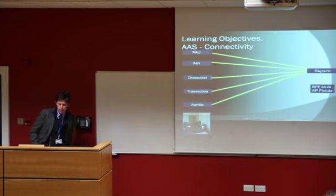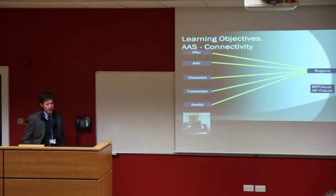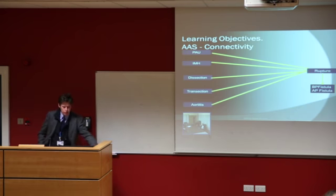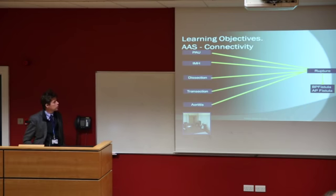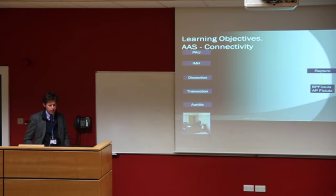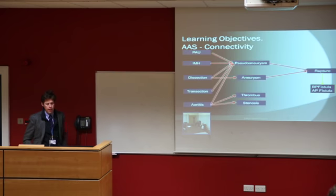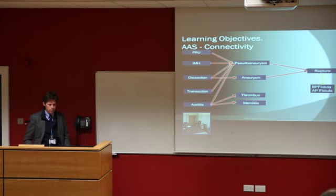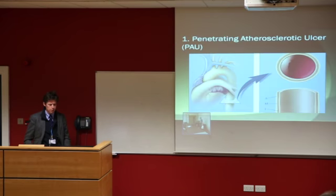Basically, acute aortic syndromes embrace the spectrum from penetrating ulcers, intramural hematomas, dissections, and transections, as well as the odd case of aortitis, and ultimately what it's all about is rupturing and uncommonly some form of fistula or connection into an adjacent organ. Superimposed on that, but somewhat connected, is the whole area of aneurysms, pseudoaneurysms, thrombus, and blockages, but those tend to be more in the chronic state and aren't really part of acute aortic syndrome — I won't talk about those today.